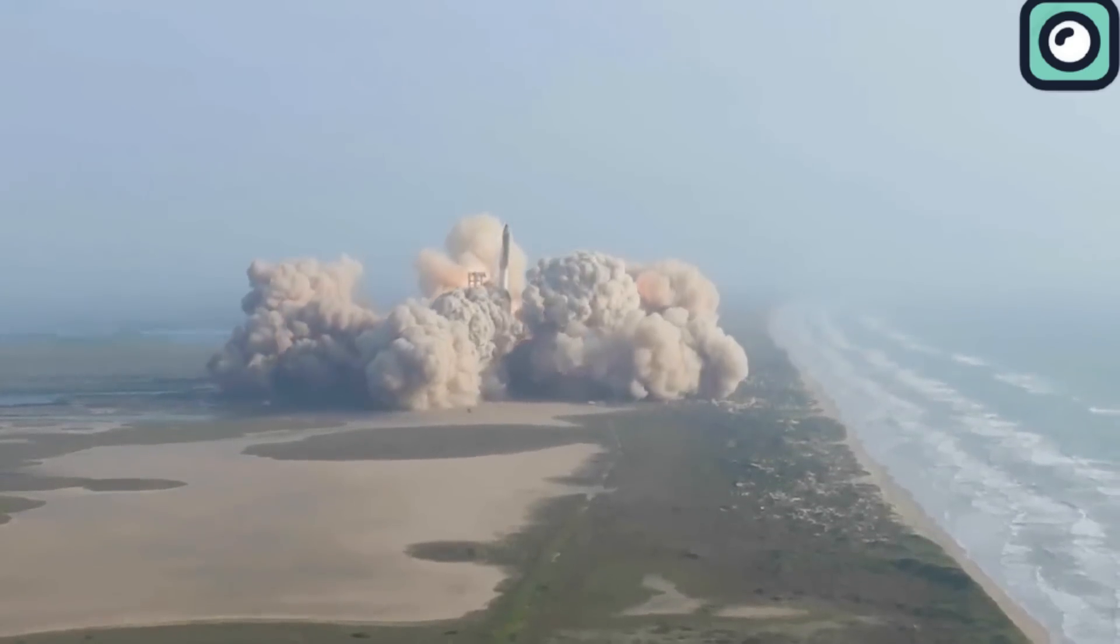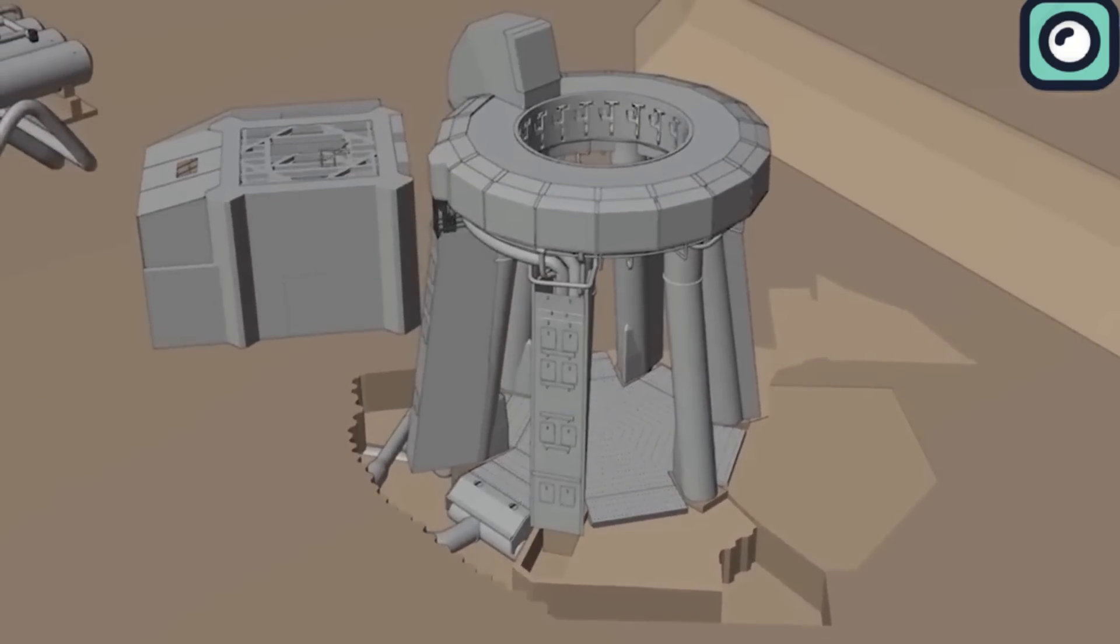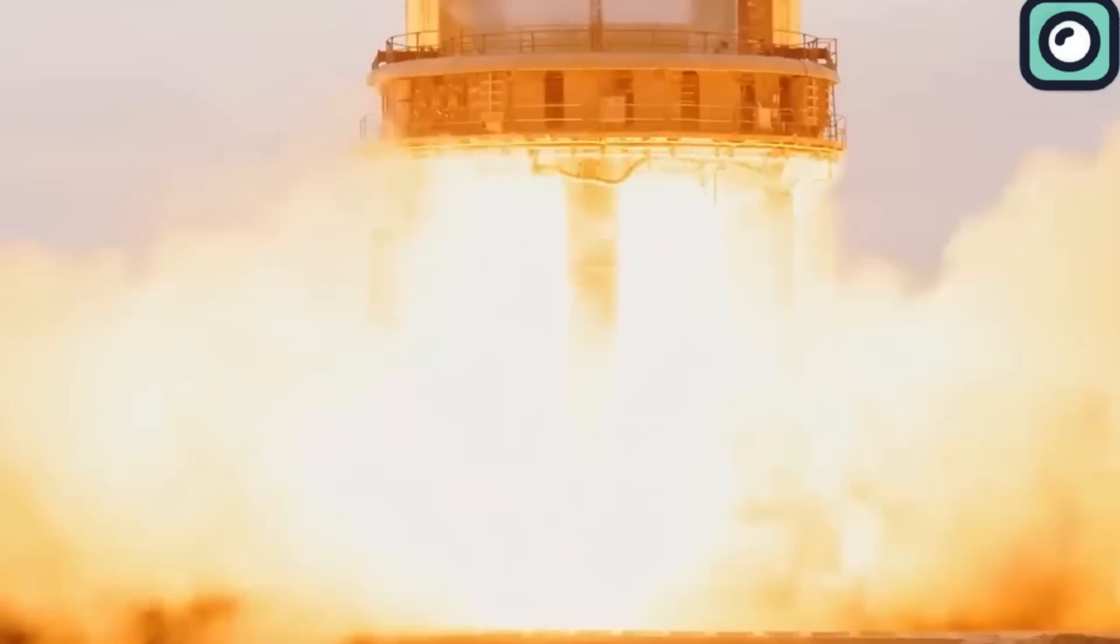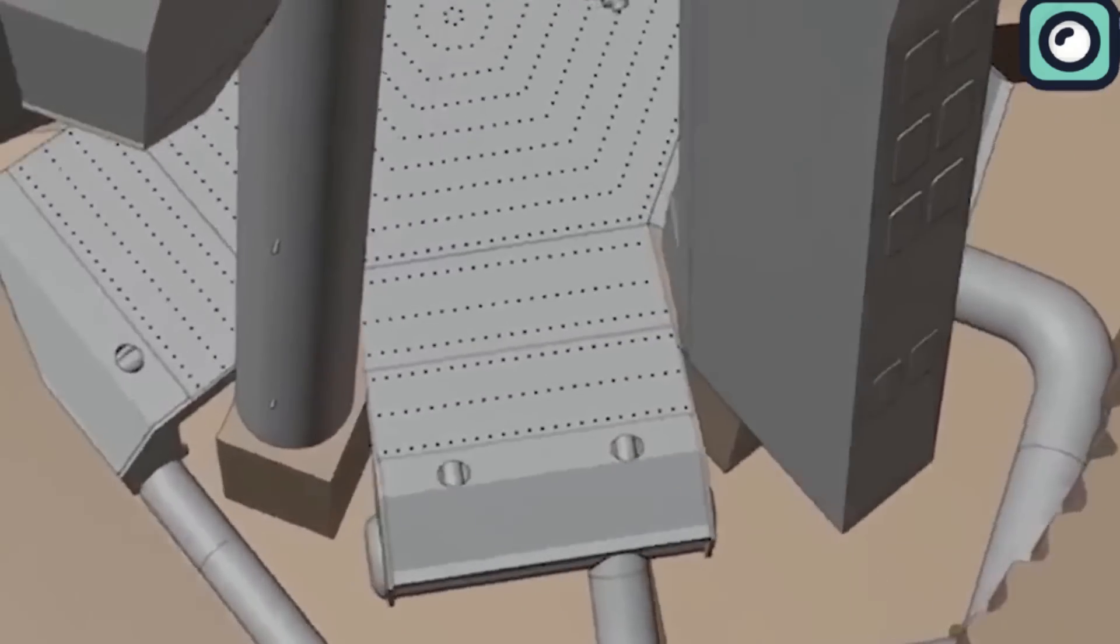In response, SpaceX installed a water deluge system at Launch Pad A designed specifically to cool the pad and manage the intense heat and vibration during launches. This system operates by spraying up to 350,000 gallons of water across the launch area, absorbing much of the heat and reducing acoustic shock, which helps protect the launch infrastructure.